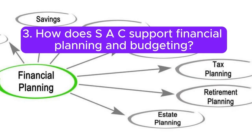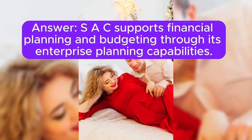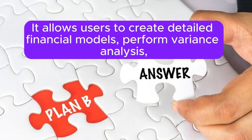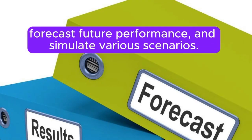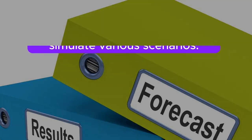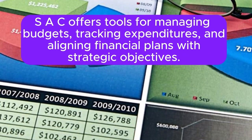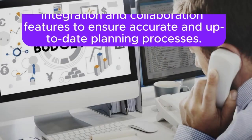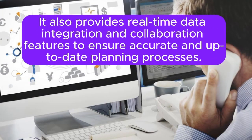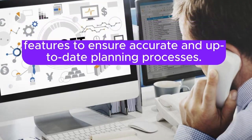Question 3: How does SAC support financial planning and budgeting? Answer: SAC supports financial planning and budgeting through its enterprise planning capabilities. It allows users to create detailed financial models, perform variance analysis, forecast future performance, and simulate various scenarios. SAC offers tools for managing budgets, tracking expenditures, and aligning financial plans with strategic objectives. It also provides real-time data integration and collaboration features to ensure accurate and up-to-date planning processes.